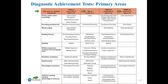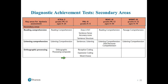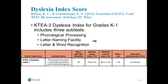If we look at the secondary areas, the chart shows reading comprehension, listening comprehension, orthographic processing, and where we can find that data from any of the four tests listed at the top. I mentioned the Dyslexia Index Score — for example, using the KT-3, the Dyslexia Index Score for grades K through 1 includes three subtests. This Dyslexia Index Score can be an important data point to drive your diagnostic assessment; it is highly effective at differentiating between children with and without dyslexia.